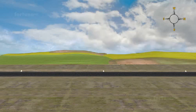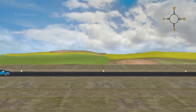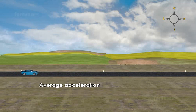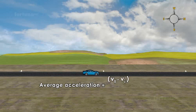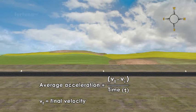The average acceleration of an object can be calculated using the equation: average acceleration equals the difference between the velocities, VF minus VI divided by time, where VF is the final velocity and VI is the initial velocity.